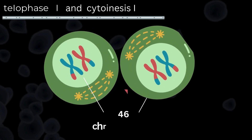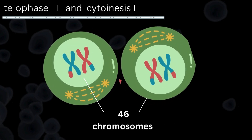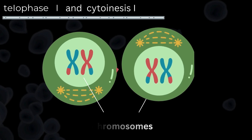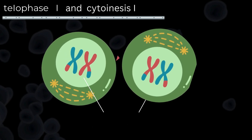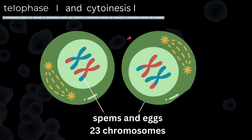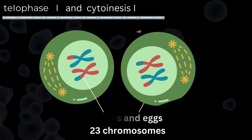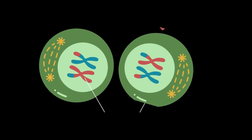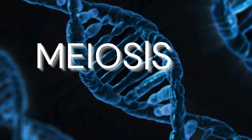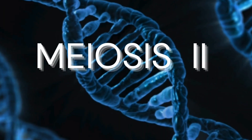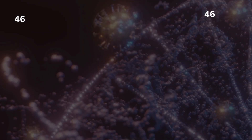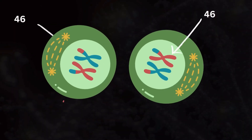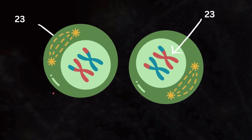We start with our recombined daughter cells, each still with 46 chromosomes, but sperm and egg cells only have 23 chromosomes, so we need to cut these cells in half. The second division, Meiosis 2, is similar to mitosis but occurs in haploid cells.